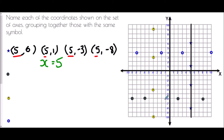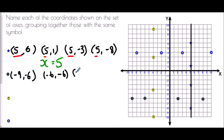Now the flower shapes. Starting at zero zero: nine to the left and six down gives (-9, -6). The next: six to the left and six down is (-6, -6). Moving to the next point: two to the right and six down is (2, -6). The last flower: eight to the right and six down is (8, -6).